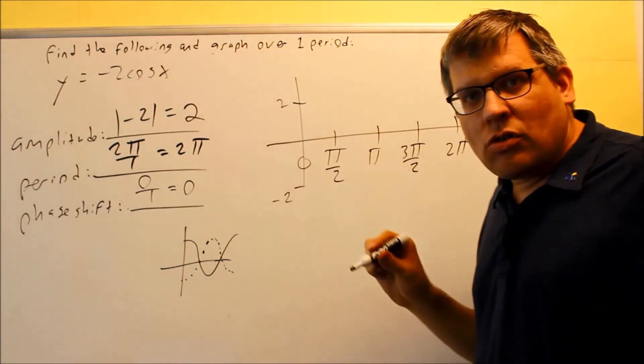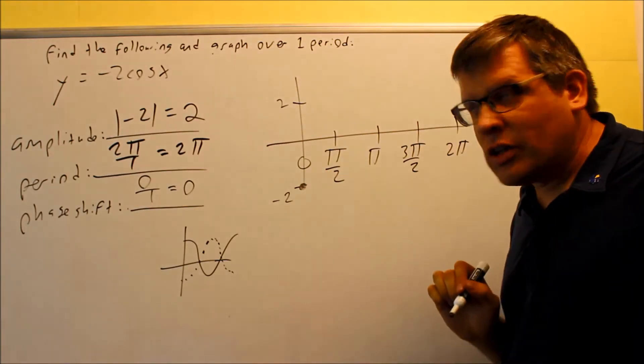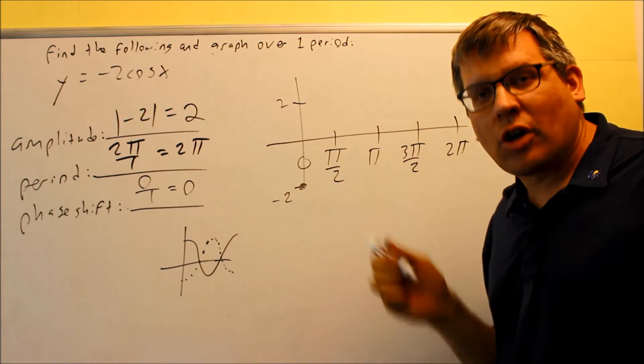If it's negative 2, that means I'm starting the graph down below here. So I'm starting the graph there at negative 2. That's always what you do whenever you have a cosine graph.